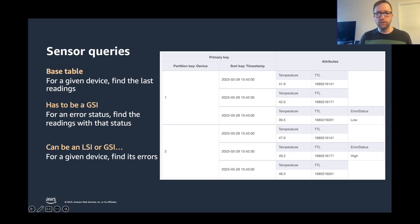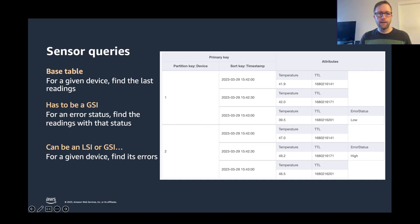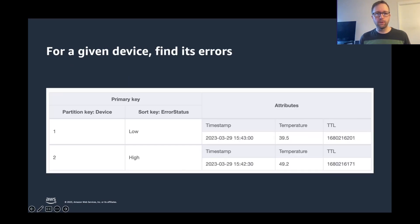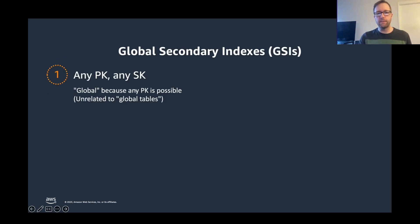For an error status, find the readings with that status — that has to be a GSI because I'm going to have a partition key of error status and maybe timestamp as the sort key. No choice. For a given device, find its errors — I could do that with either one. Which one should I pick? Should this be an LSI? Should this be a GSI? Notice how the PK is the same, but the SK is different than the base table.